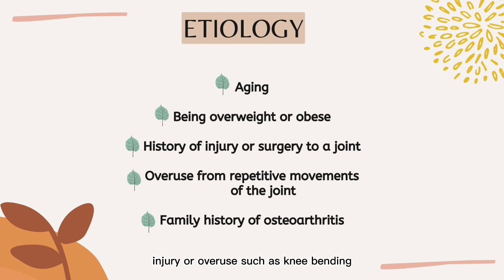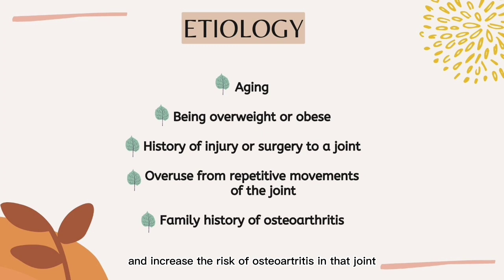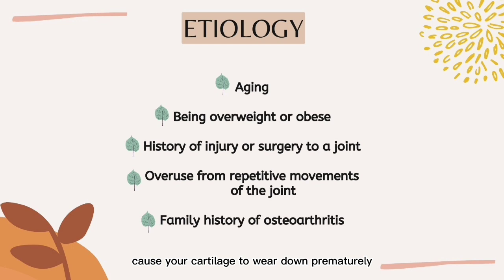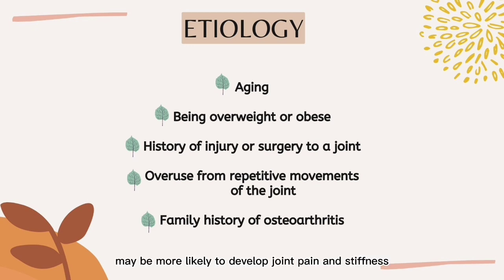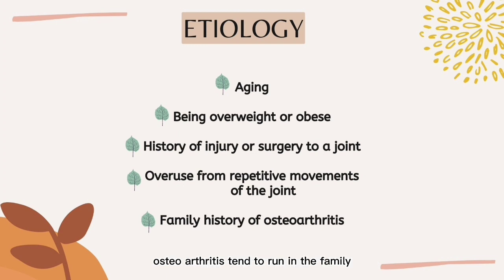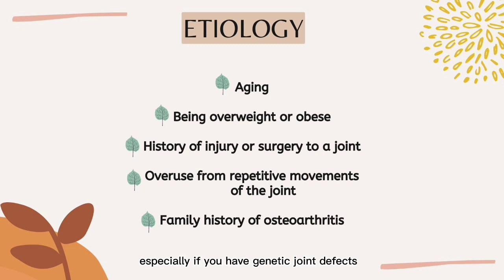The third factor is joint injury or overuse. Injury or overuse, such as knee bending and repetitive stress on a joint, can damage a joint and increase the risk of osteoarthritis. Repetitive strain can cause the cartilage to wear down prematurely. People who perform certain repetitive activities for hours at a time may be more likely to develop joint pain. The last factor is family history of osteoarthritis. Osteoarthritis tends to run in the family, especially if you have genetic joint defects.